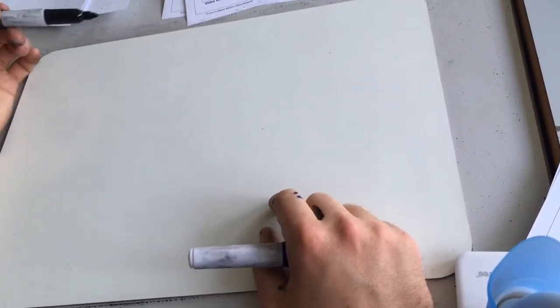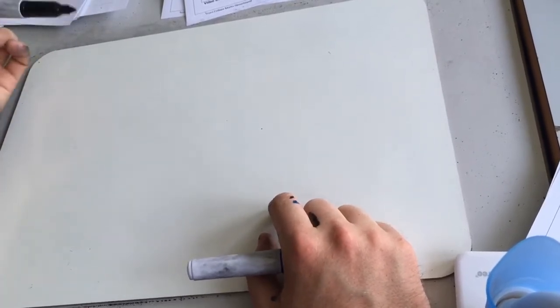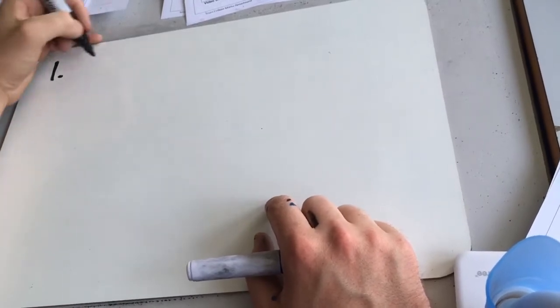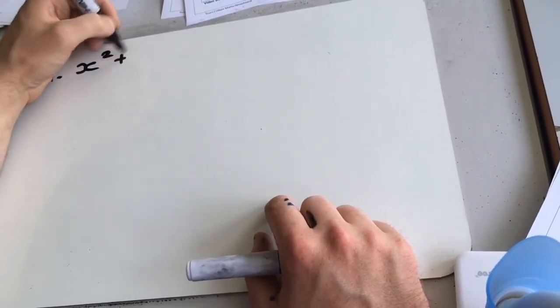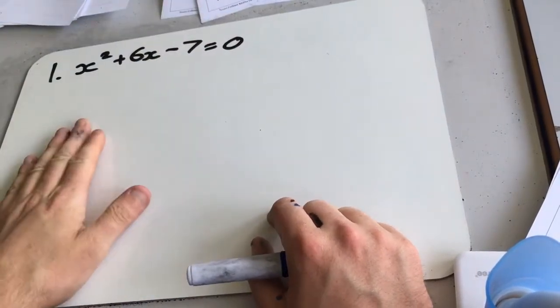Right, so exercise 4c continues from 4b. We're completing the square, but now we're going one step further. We're trying to solve by using completing the square, which is what the quadratic formula does when it solves things. First one, x squared plus 6x minus 7 equals 0. So we're going to start off completing the square as normal.